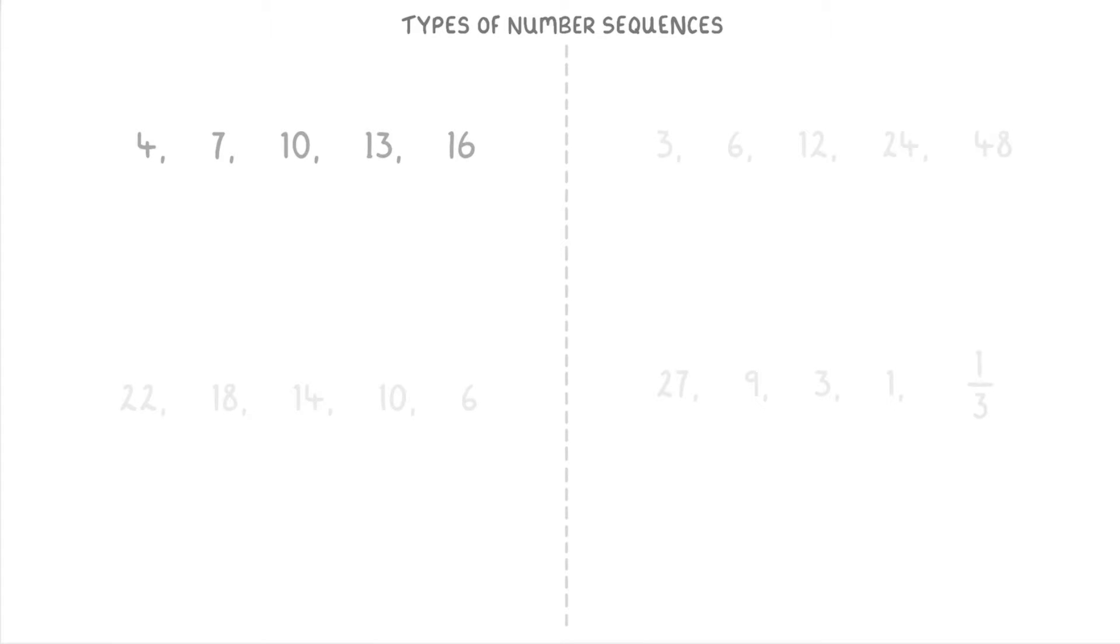Whenever you look at a sequence like this one in the top left, the first thing you want to do is see what the difference between the terms is. For example, to get from 4 to 7 we'd have to add 3, so we could draw an arrow between the two of them with a +3 under it. Then to get from 7 to 10 we'd have to add another 3, and do the same again to get to 13 and then to 16. So the pattern here is that we're adding 3 each time.